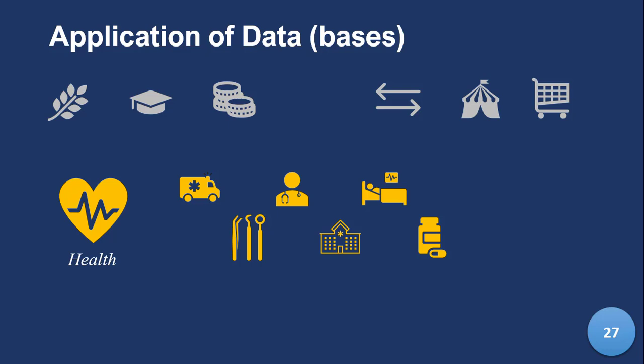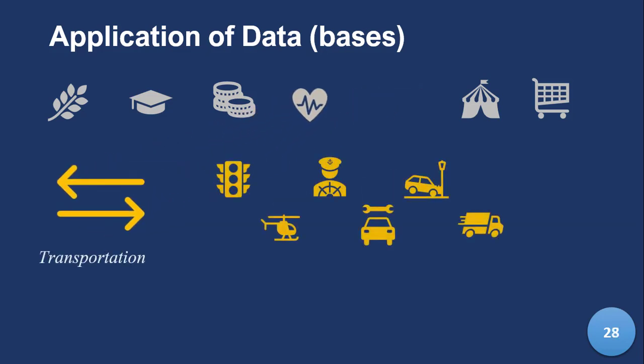In health, the equipment used for operations, ambulances for transportation, the staff, the patients — patients are entities — inpatient, outpatient, the drugs, the buildings: all databases. In transportation, how many planes are in the air right now? How many from different airlines? How many Boeing 747s, how many helicopters? How long was your car maintained, how frequent, what speed, how many mechanics? The transportation industry has massive data.